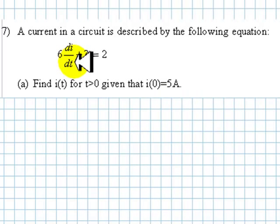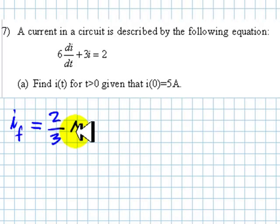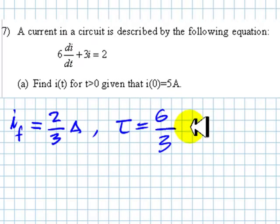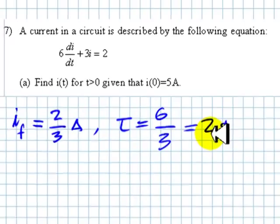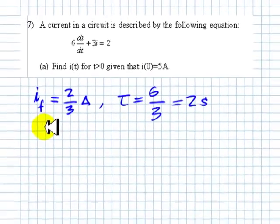Well, immediately we say the final value of this current is going to be 2 divided by 3. So, the final value of that current is going to be 2 thirds of an amp. And the time constant will be 6 divided by 3, 2 seconds. So, that is a current that starts at 5, ends at 2 thirds of an amp and changes values with this time constant.